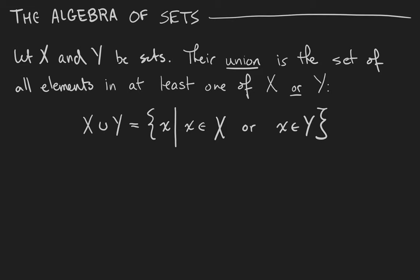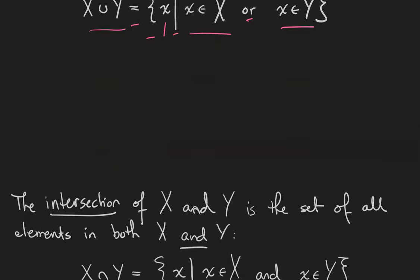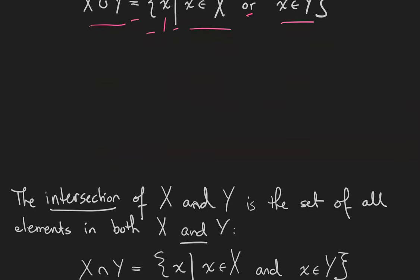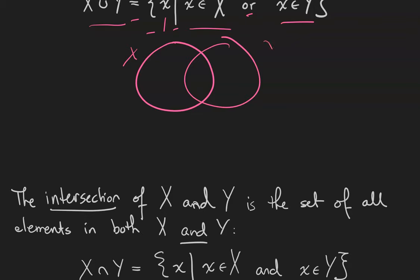We're going to let x and y be sets. Their union is the set of all elements that are in at least one of x or y. In set builder notation, the union of x and y is the set of all elements such that x is in x or x is in y. You may have heard of a Venn diagram before — that's a way to represent different combinations of sets. If this circle represents the set x and this circle represents the set y, then this is their union: the set of all elements that are in x or in y.